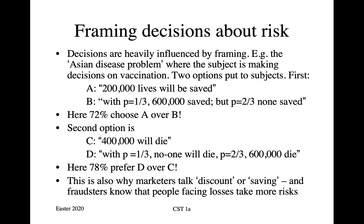The second option framing presented is: if you continue with the current course of action, 400,000 people will die; but with the new vaccine, with probability one-third nobody dies, and with probability two-thirds 600,000 will die. Here, 78% prefer to gamble on Option C. So the way advice is framed — whether in terms of definite savings or probabilistic savings, definite losses or probabilistic losses — is critically important when advising a cabinet. This is why marketers talk about discounts and savings, and why fraudsters know that people facing losses are likely to take more risks.